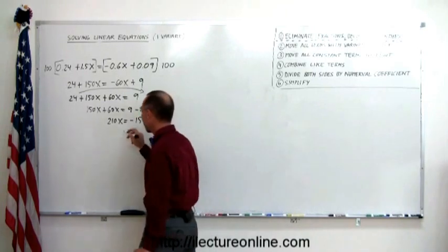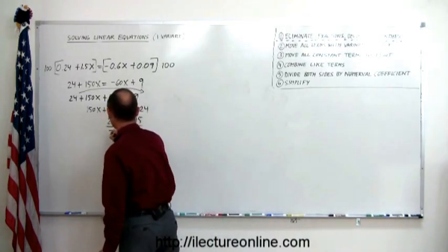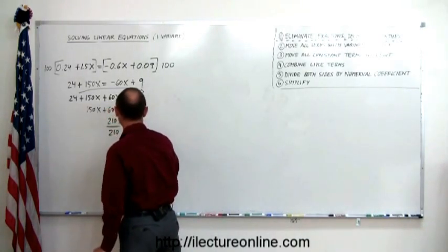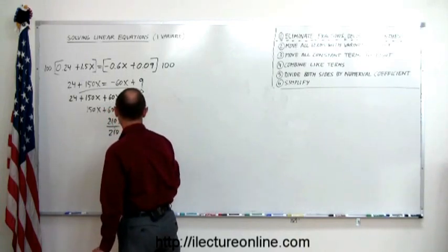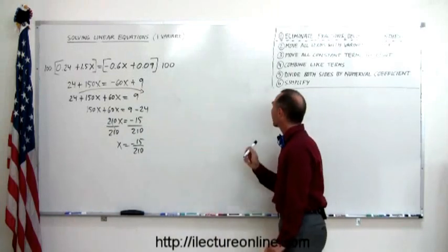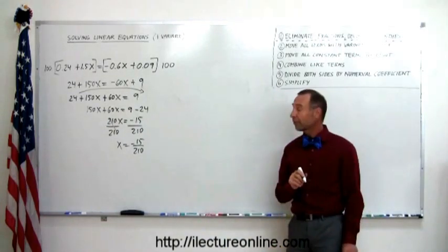Now we divide both sides of the equation by the numerical coefficients, so divide both sides by 210. Cancels out, we have x equals minus 15 over 210. And, don't forget step number six, it looks like we simplify that.